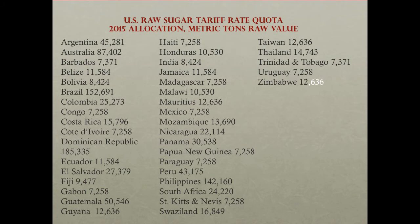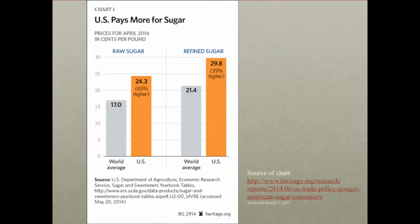The U.S. sugar policy has several dimensions: there is a tariff and also a quota. Here is the 2015 allocation by metric tons for the amount of sugar that can be imported into the United States. The United States does produce sugar, but not enough to meet the demand of all its people — and that demand is quite significant. The government limits imports to these amounts by country and, in addition, charges a tariff. Those are the two primary mechanisms in this policy.